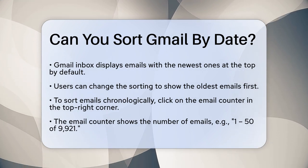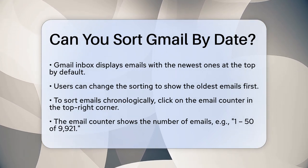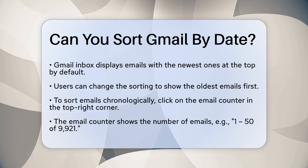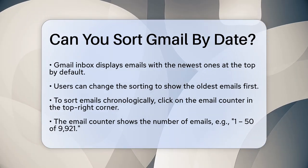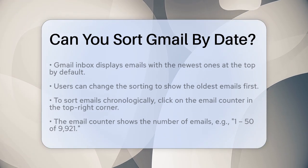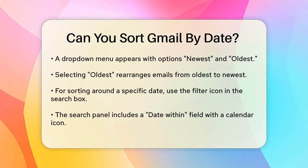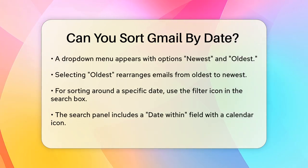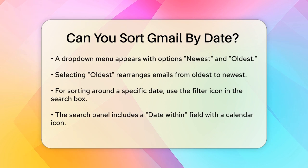To sort your Gmail inbox chronologically, you need to use the email counter located at the top right corner of your inbox. This counter shows the number of emails you have, like 1–50 of 9,921. Click on this counter and a drop-down menu will appear with two options — newest and oldest. Select oldest to see your emails sorted from the oldest to the newest.